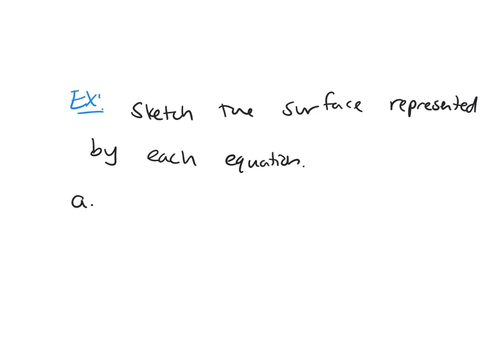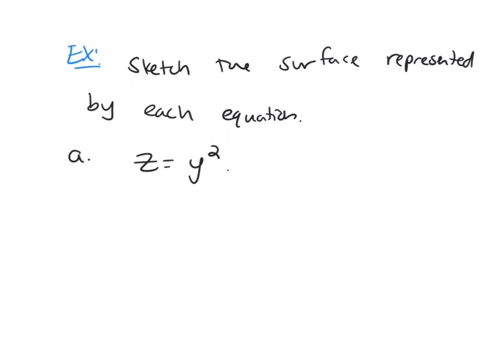So the first one we're going to look at is Z equals Y squared. Here notice you don't have your variable X, and so what this means is you're going to get a cylinder here.